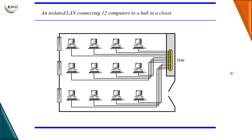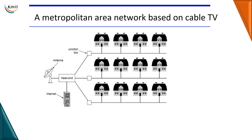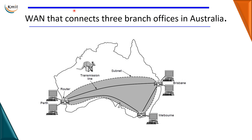You can see an example of a LAN connecting 12 computers — an Ethernet LAN using a hub to connect 12 computers locally. For a metropolitan area network, the best example is a cable TV connection connecting buildings within a city. For the wide area network, we see three branch offices in Australia — three cities in a country — connected using a sub-network through connecting devices like routers.